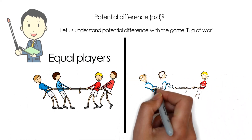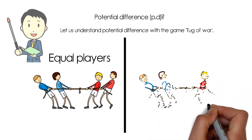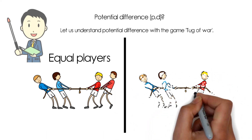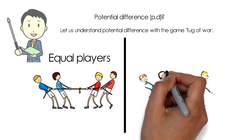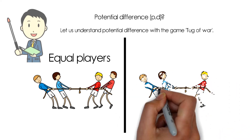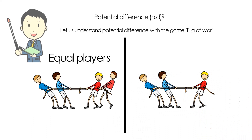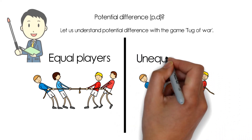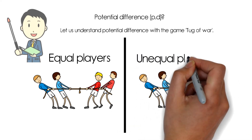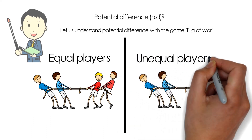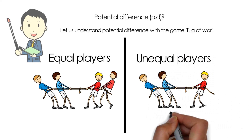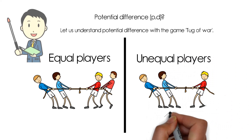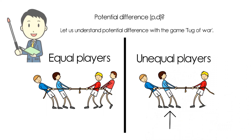On the other hand, if the left team has two players and the right team has only one player, it is an unequal number. In that case the left team, which has two players, will win.